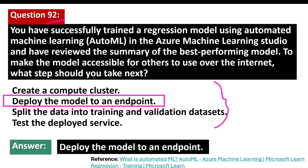You can deploy the best performing model for client applications to use over the internet by using an endpoint. To publish the model for others to use from the internet, you should deploy the model as an endpoint. This process involves creating a web service that hosts the model, enabling client applications to make requests to it and obtain predictions.